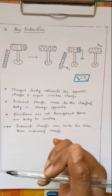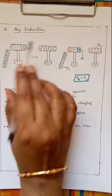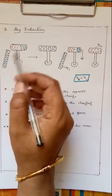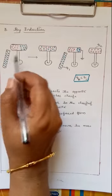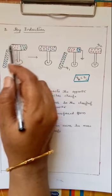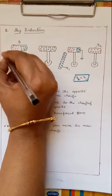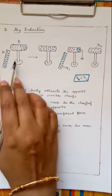Here by induction means we are going to induce the charges, so obviously we are not going to bring the bodies in contact. Here again I have taken one metallic rod and a conductor. Imagine this conductor B is not charged initially.